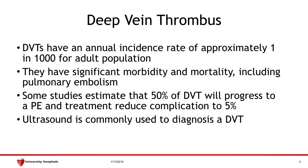DVTs are an extremely common emergency department complaint with an annual incidence rate of 1 in 1,000 for the adult non-pregnant population. They do carry significant morbidity and mortality, which includes pulmonary embolisms. Some studies indicate that up to 50% of DVTs will progress to a pulmonary embolism, and that anticoagulation treatment will reduce the complication to about 5%. Ultrasound is commonly used to diagnose a DVT.